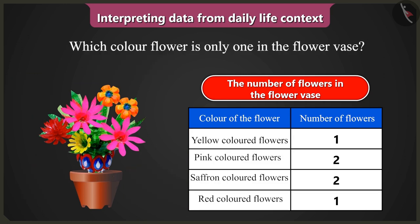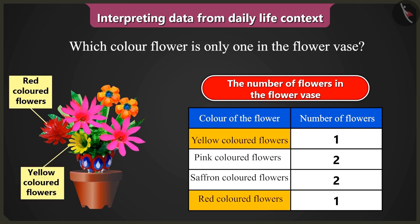Which color flower is only one in the flowers? Yellow and red colored flowers are one each.